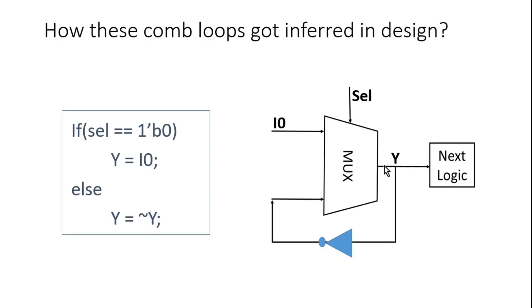So the behavior of our design is not predictable here. That is why some of the tools throw a critical warning when a combinational loop is inferred, and some of the tools give you an error that a combinational loop is inferred.